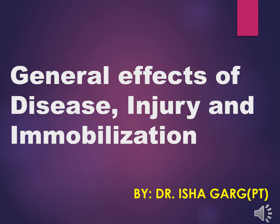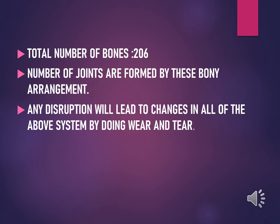Hello friends, hope you are following us regularly. Today let's study about the general effects of disease, injury, and immobilization. As you know, these things happen in a body in everyday life. There are a total of 206 bones in the body, forming a large number of joints in different arrangements. Any injury, disease, or immobilization may cause disruption in the system by the wear and tear process.